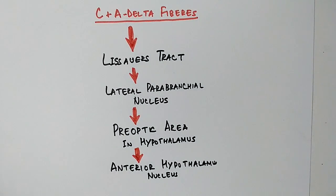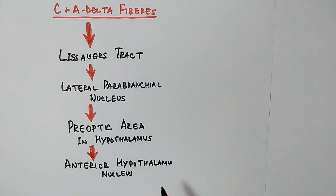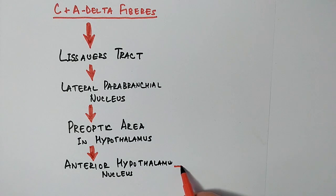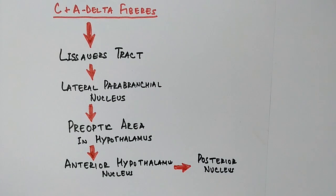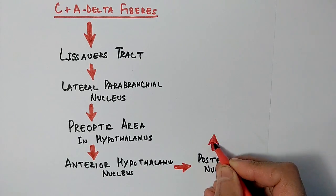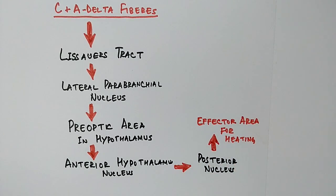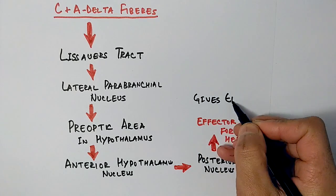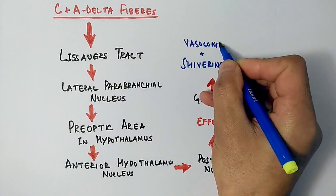Now we will see how the effector response occurs. The pre-optic area in the hypothalamus sends a signal to the anterior hypothalamic nucleus, which helps in cooling. The anterior hypothalamic nucleus then sends the signal to the posterior nucleus, which is the effector area for heating. It gives the effector response in the form of shivering and vasoconstriction.